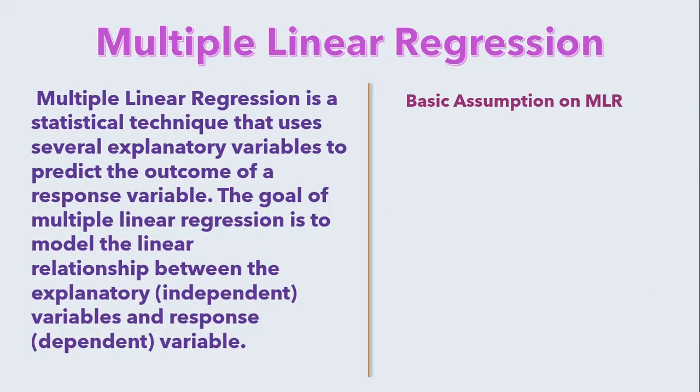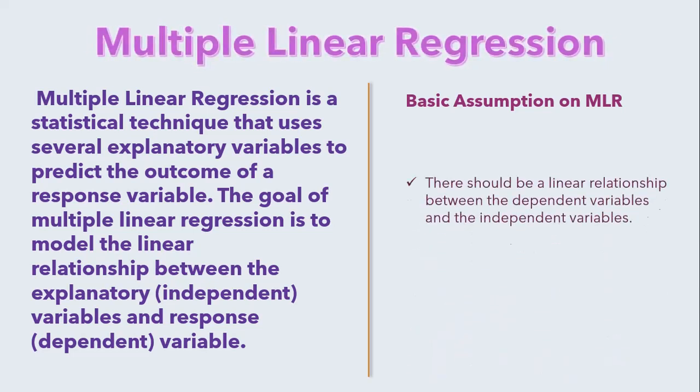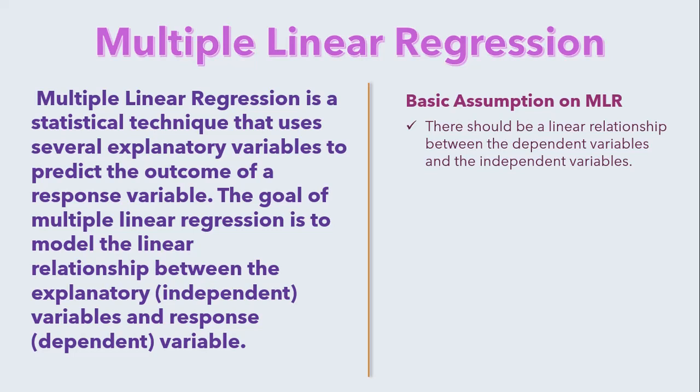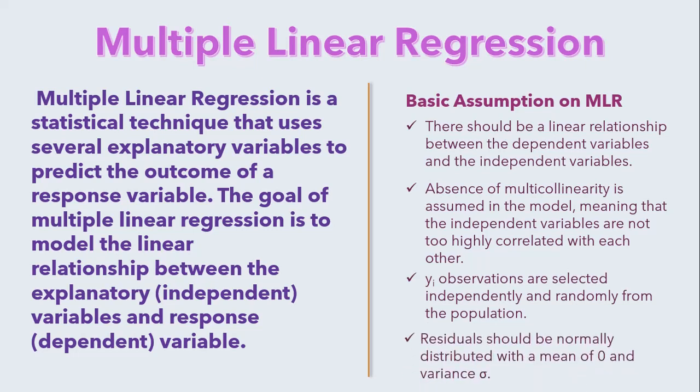Multiple linear regression model is based on some assumptions. There should be a linear relationship between the dependent variables and independent variables. There should be absence of multicollinearity, meaning that the independent variables are not too highly correlated with each other. Y observations are selected independently and randomly from the population. And residuals should be normally distributed with a mean of 0 and variance sigma.